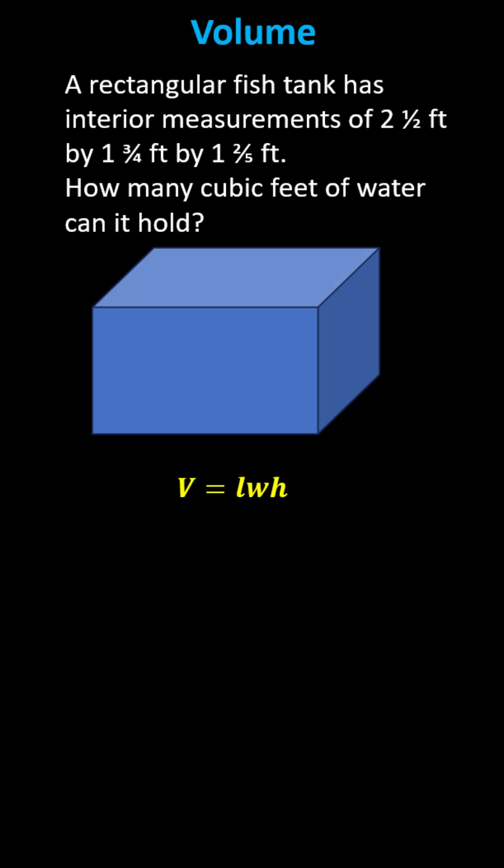A rectangular fish tank has interior measurements of two and a half feet by one and three fourths feet by one and two fifths feet. How many cubic feet of water can it hold, meaning what is the volume of the right rectangular prism?